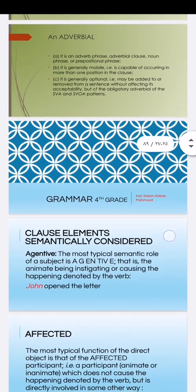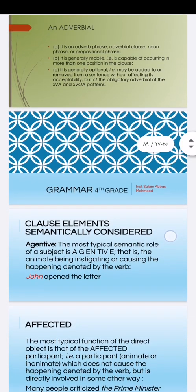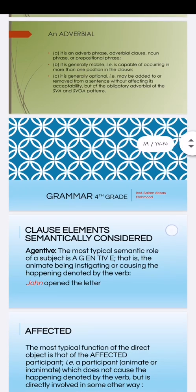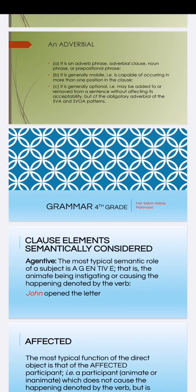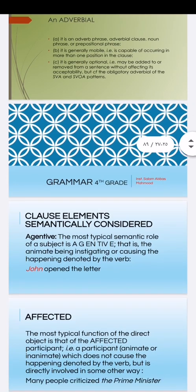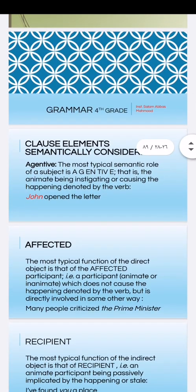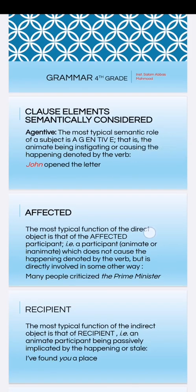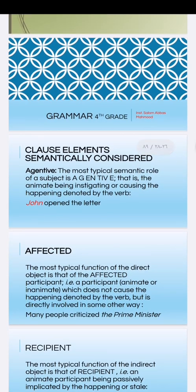Now the second distinction: closed elements semantically. There is syntax and there is semantics. The subject, verb, and adverb we discussed — that is grammar in the deep sense, deep rules. As for meaning, semantics covers roles like: agentive, affected, recipient, and beneficiary.